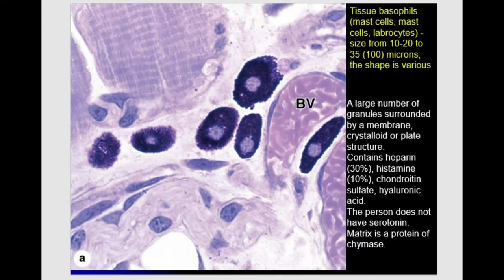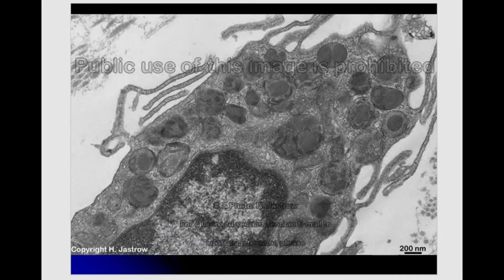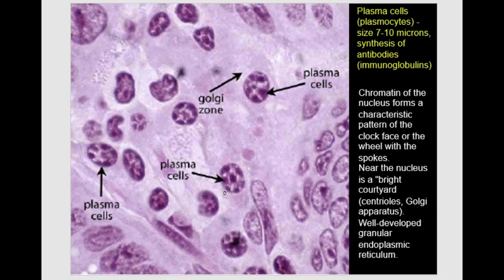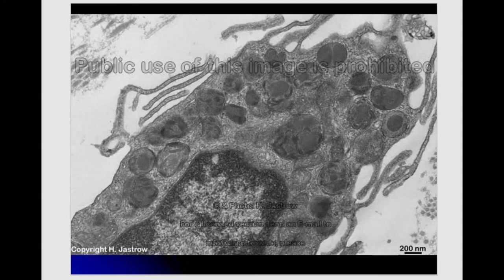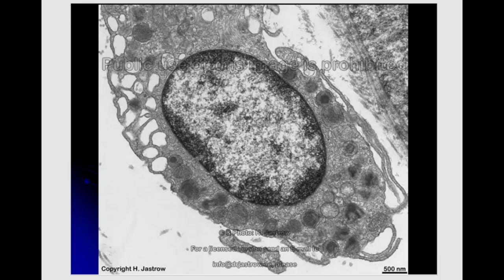Tissue basophils take an active part in immune responses — specifically in the initiation of inflammation in the human body. Looking at an electron micrograph, you can see the granules of basophils. After releasing histamine and heparin outside, the vesicles appear as empty gaps. This means the cell took part in inflammation and released histamine and heparin into the extracellular space.